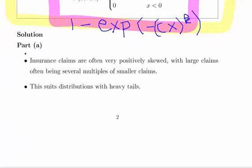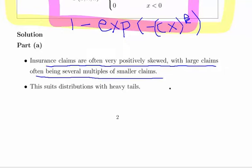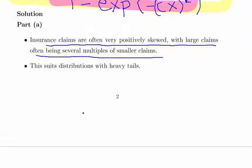The first question is why we would use distributions like this, like the Weibull distribution. Essentially insurance claims are often very positively skewed with large claims, often several multiples of smaller claims.